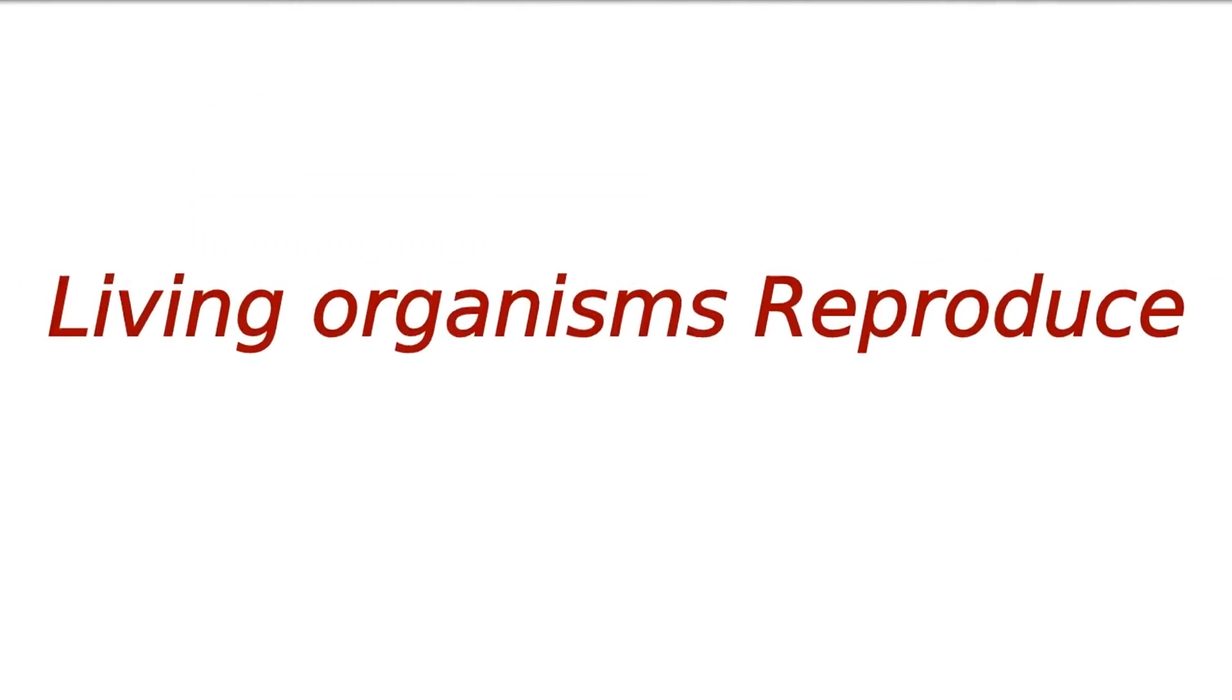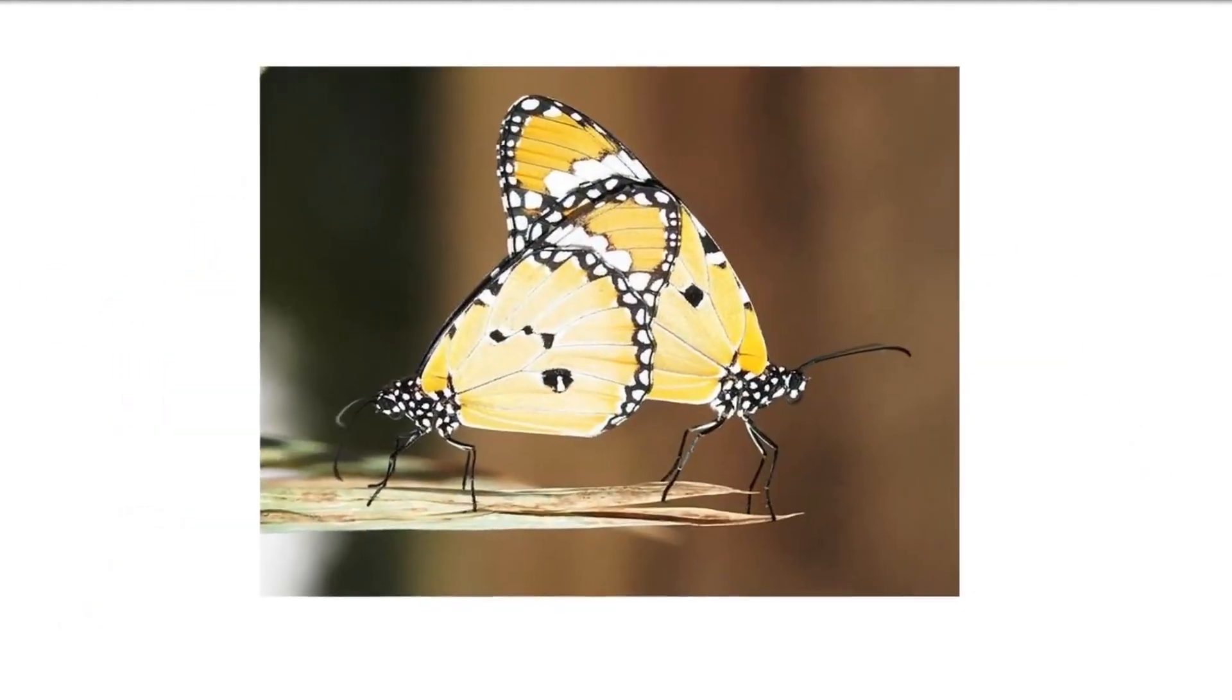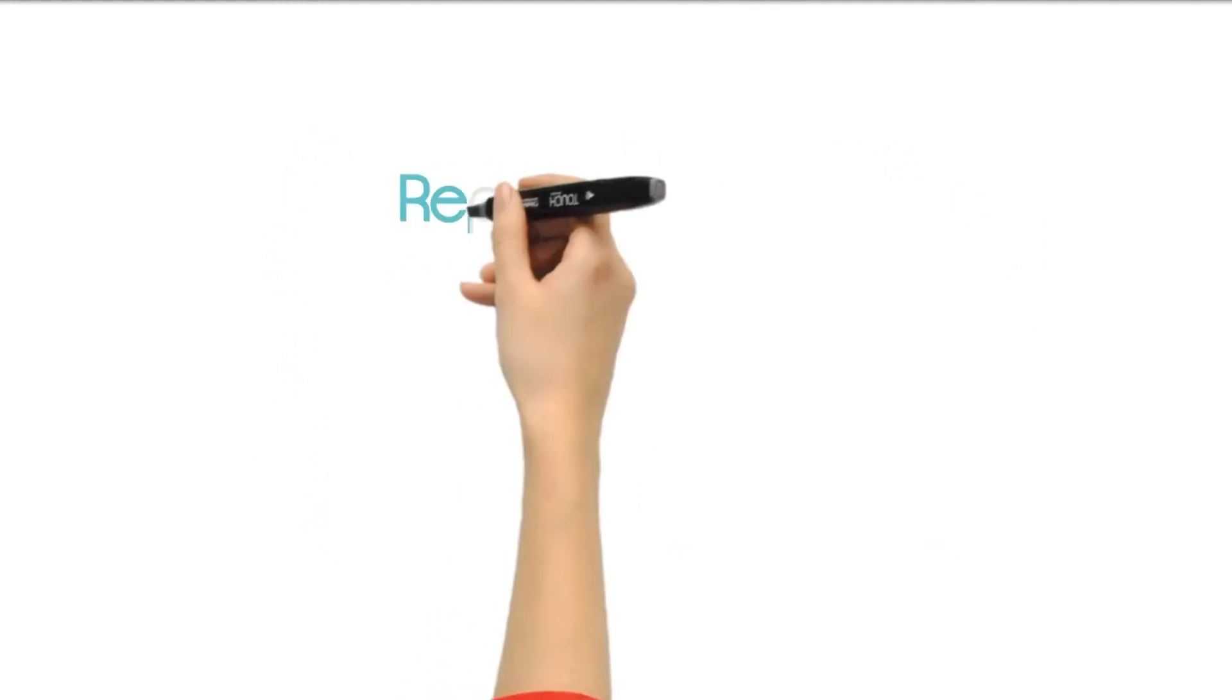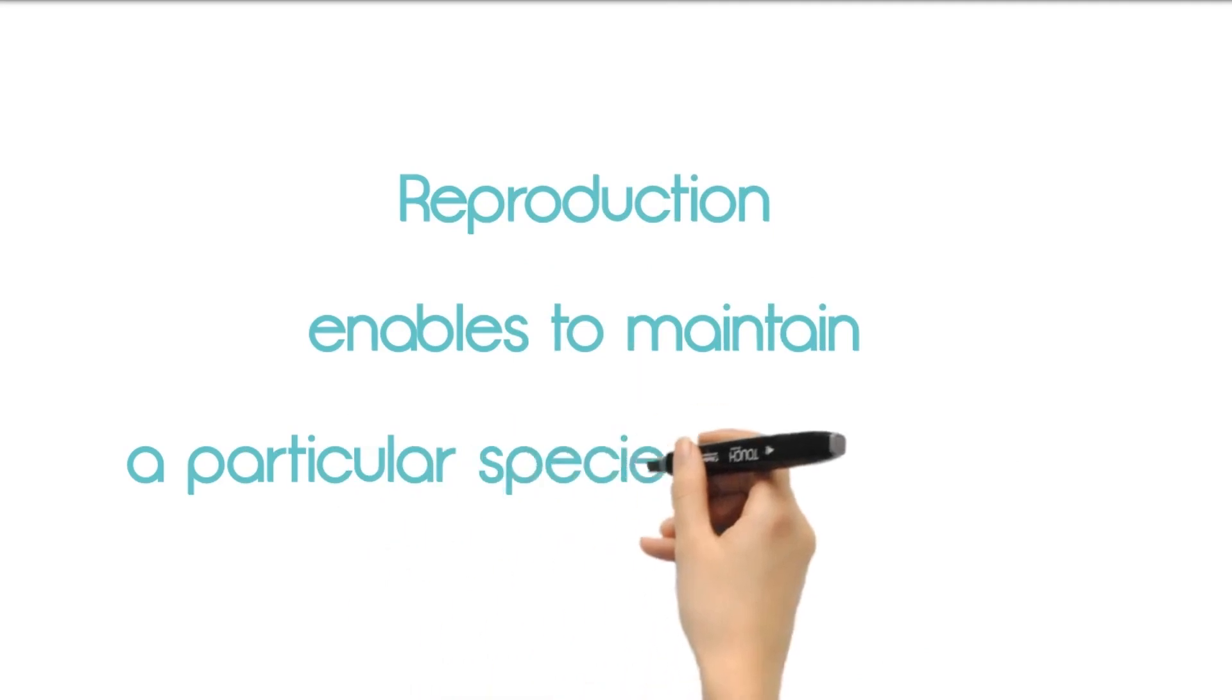Living organisms reproduce. Reproduction is the process by which living organisms produce new individuals of their own kind. Reproduction thus enables to maintain a particular species on the earth.